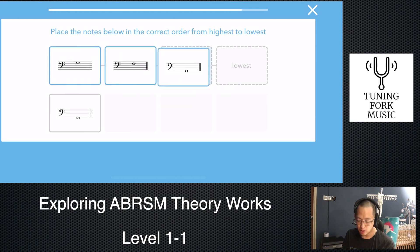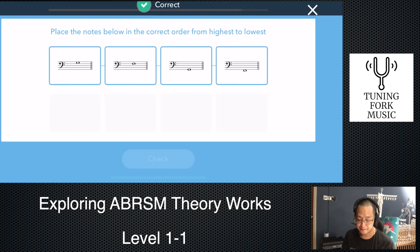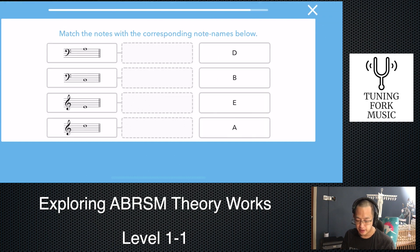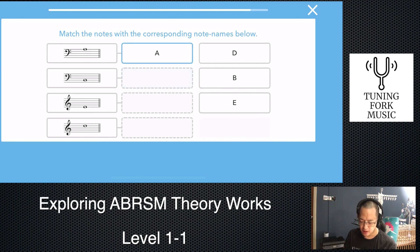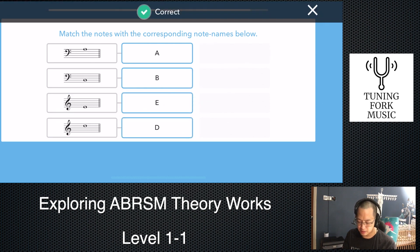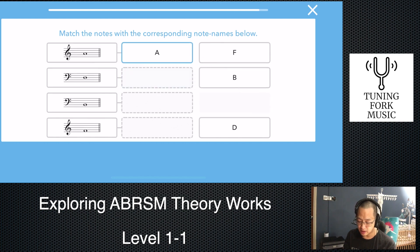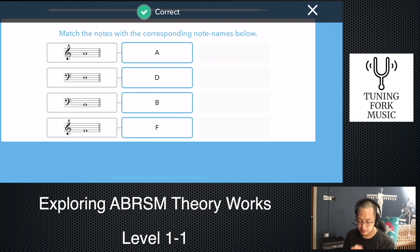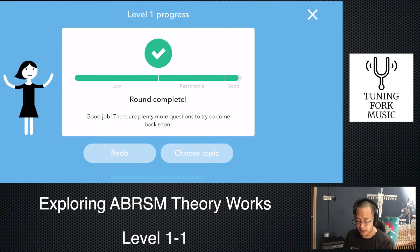Once again, from highest to lowest. Upper sol, fa. Lower sol, lower fa. Match notes. Check your clef. Check line or space. Whatever works for you. This is la. This is ti. This is mi. And this is re. And that round's complete.